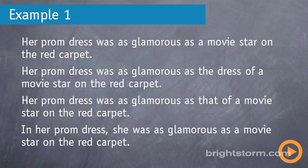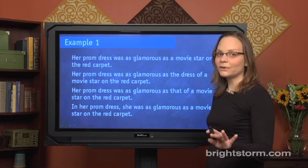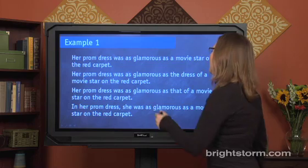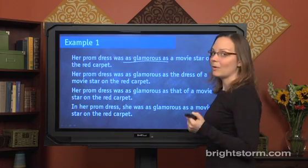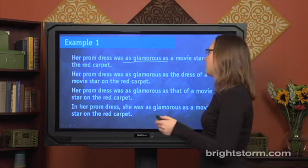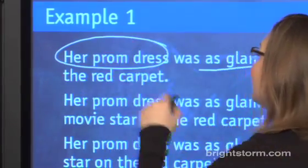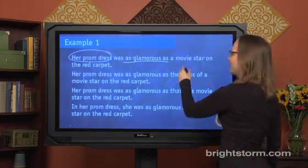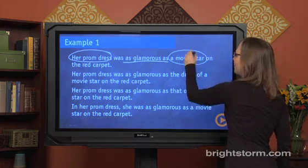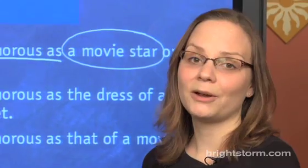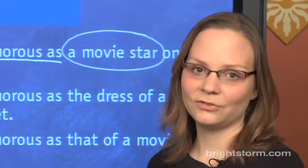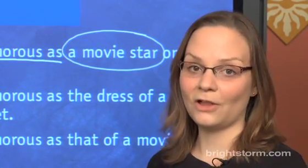Here's a flawed example: 'Her prom dress was as glamorous as a movie star on the red carpet.' We know it's a comparison because of the phrase 'as glamorous as.' On one hand we have 'her prom dress' — a dress — and on the other hand we have 'a movie star' — a person. You don't want to compare a dress to a person, so this sentence is flawed.